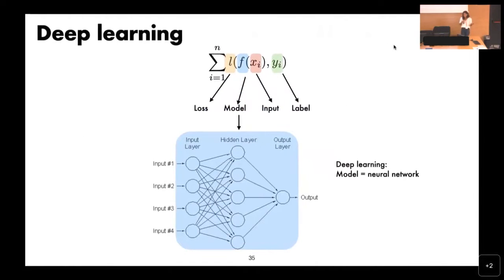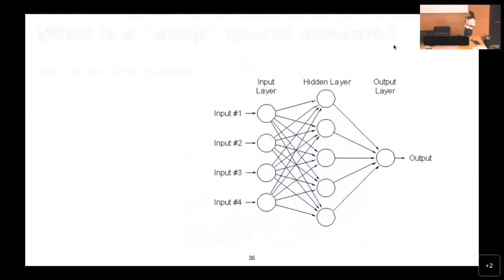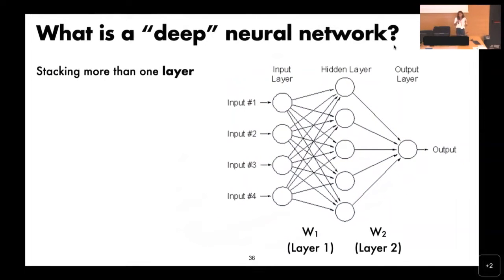Deep learning is when this model F is a neural network. A deep neural network is whenever you're stacking more than one layer — the W's are the layers, with input X and output Y. A linear classifier WX + B would be just one layer. Stacking another WX + B on top gives you a two-layer neural network. You can have non-linearity and other things in between. What is a layer? It's typically just a simple matrix multiplication, but the function can take many forms.